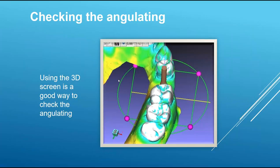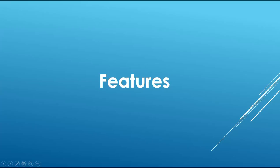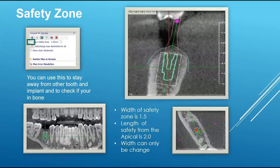For checking angulation, you'll use the 3D image — it gives you the best view of the angulation and how the restorative part is going to look.